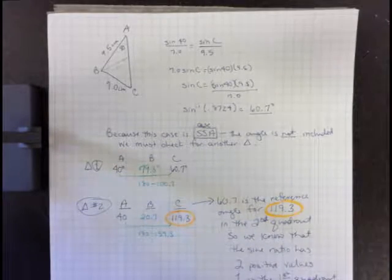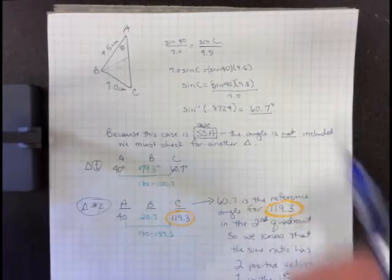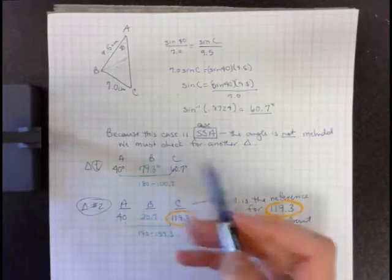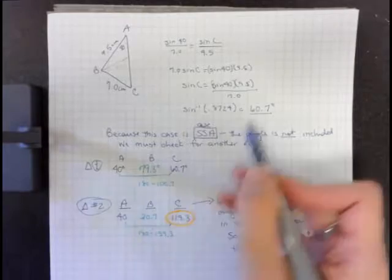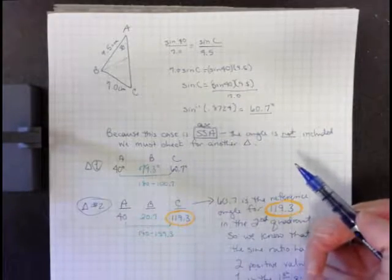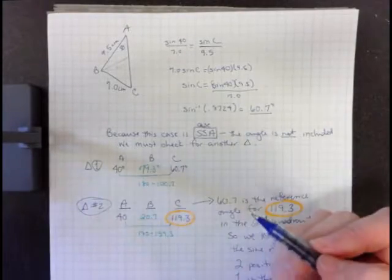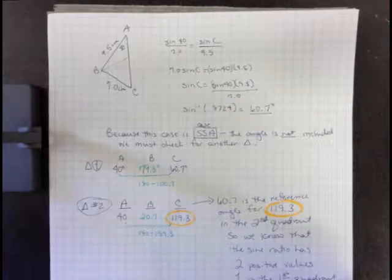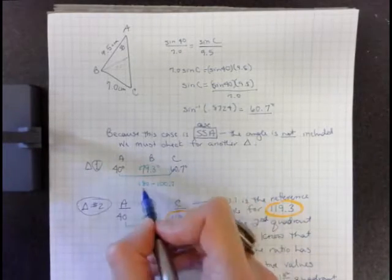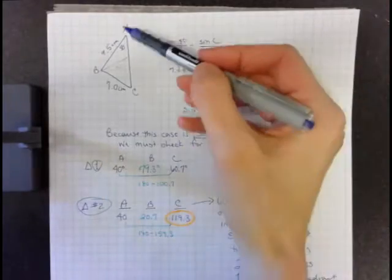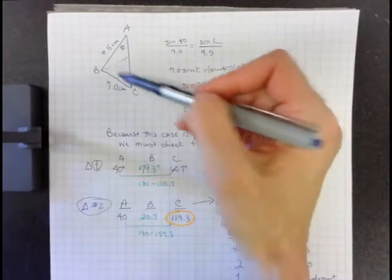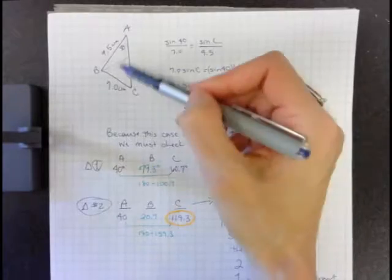The first triangle we found: we know that this is 40 degrees (angle A) and we know that C is 60.7 degrees because we did the Law of Sines. In order to find that third angle, we just subtract the sum from 180, and we get that third angle. So this is one of those triangles, and that would be this big one here where the three angles are acute.